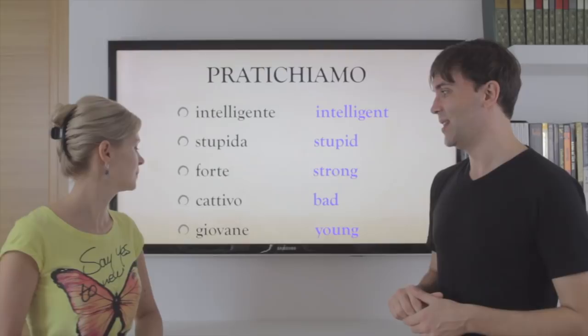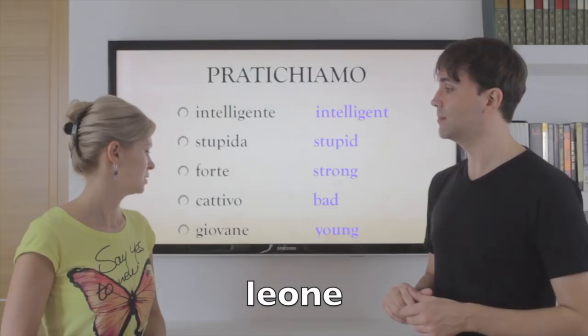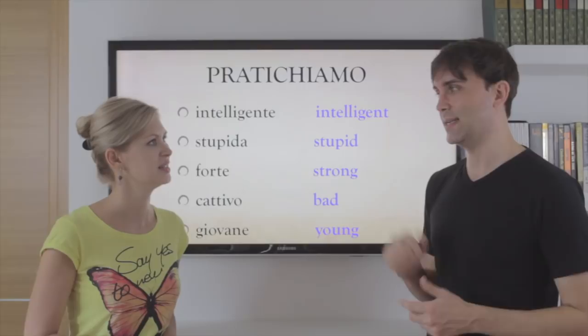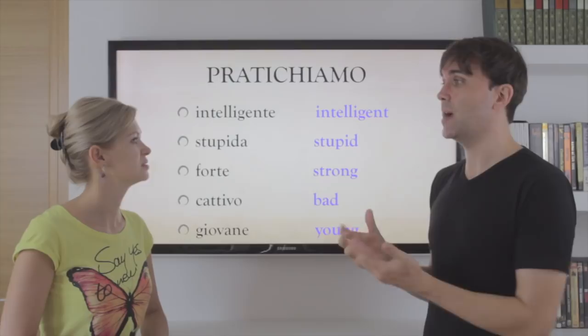Giovane — let's practice with leone, lion. Leone giovane, leoni giovani. So as you can see, the adjective follows the noun. They go together and they change together.